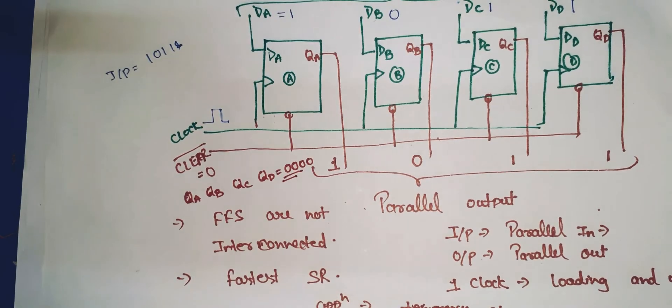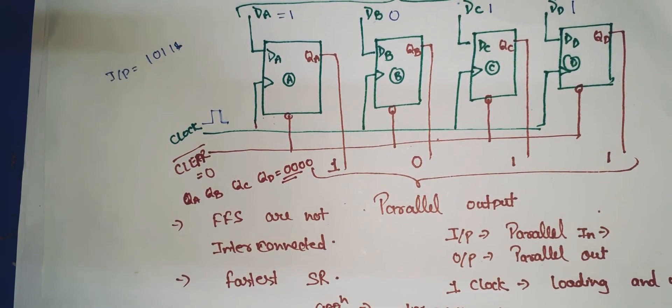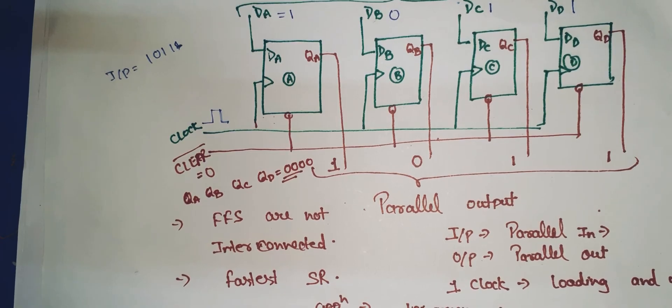This is the initial state. And if we perform shifting, then the clear value must be equal to 1.